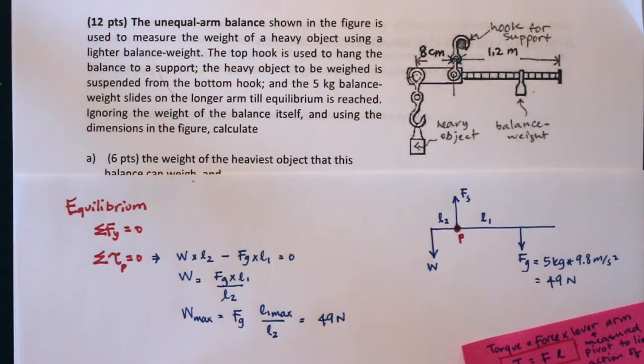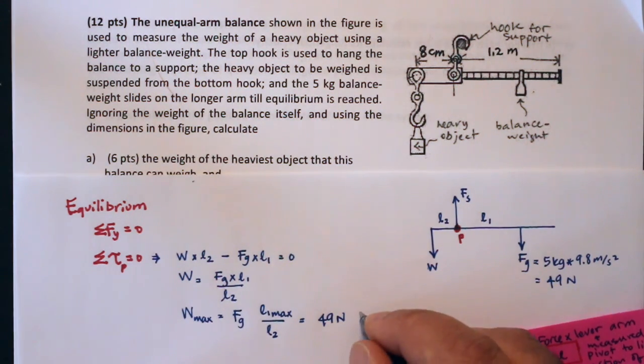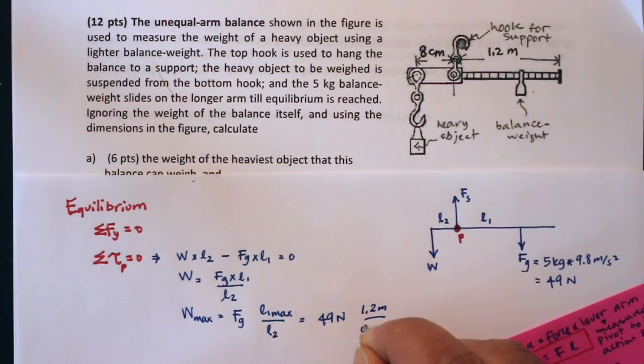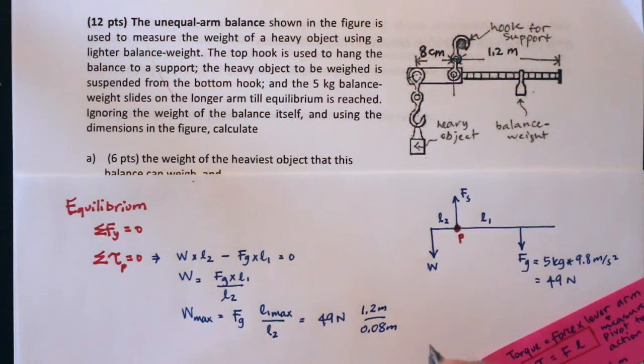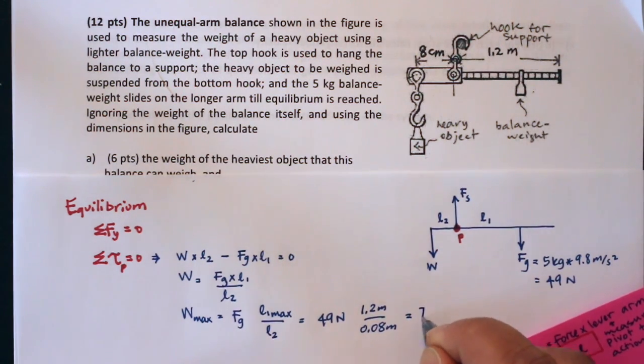This I can put in meters or in centimeters, it doesn't matter because I'm dividing the two by each other, so they just need to be the same unit. We can say 1.2 meters over 0.08 meters, or 120 centimeters over 8 centimeters. 120 over 8 is 15 because 80 over 8 is 10 and then 40 over 8 is 5, so 120 over 8 is 15. 15 times 49: 15 times 5 is 75, add a 0, and then subtract 1 times 15, so that's 735 newtons.